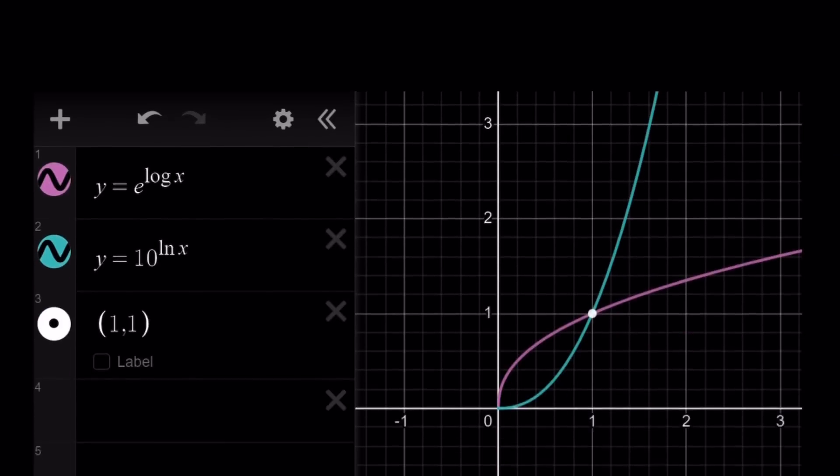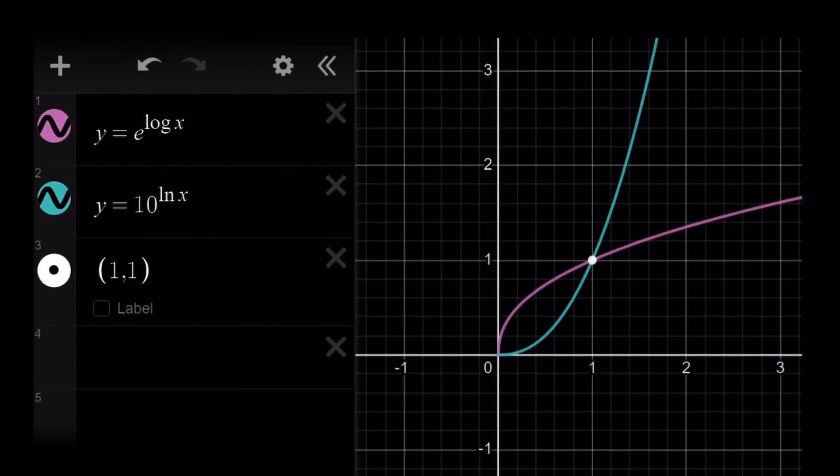Let me show you the graph real quick. Yay. These are interesting graphs. I find these graphs really interesting. And there's one thing very interesting about these functions. Let's see if you're going to be able to spot that. These functions are related. e to the power log x and 10 to the power ln x. And the only solution is at 1,1 which means x equals 1.